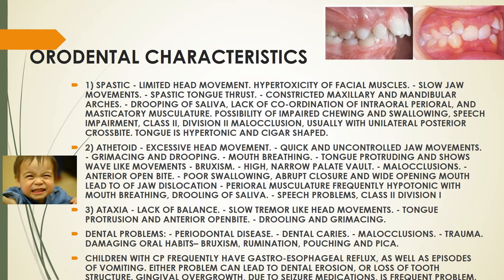Now the oral and dental characteristics — first, spastic type. In spastic there is limited head movement, hypertoxicity of the facial muscles, slow jaw movements, spastic tongue thrust, and the maxilla and mandible are constricted. There is drooping of saliva and lack of coordination of the intraoral, perioral, and masticatory musculature, with impaired chewing and swallowing.